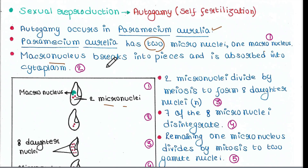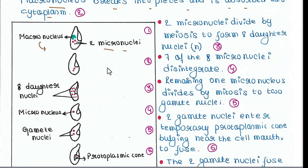The macronucleus breaks into pieces and is absorbed into the cytoplasm. Now the two micronuclei divide by meiosis to form eight daughter nuclei — four daughter nuclei from each micronucleus. All eight daughter nuclei are haploid since this is a meiotic cell division.